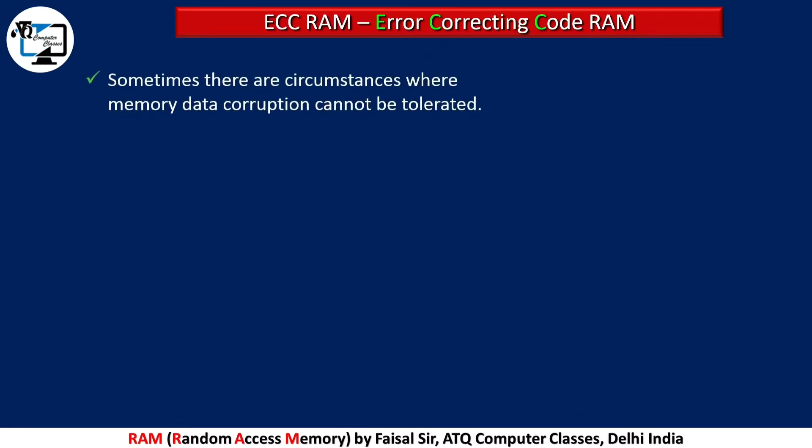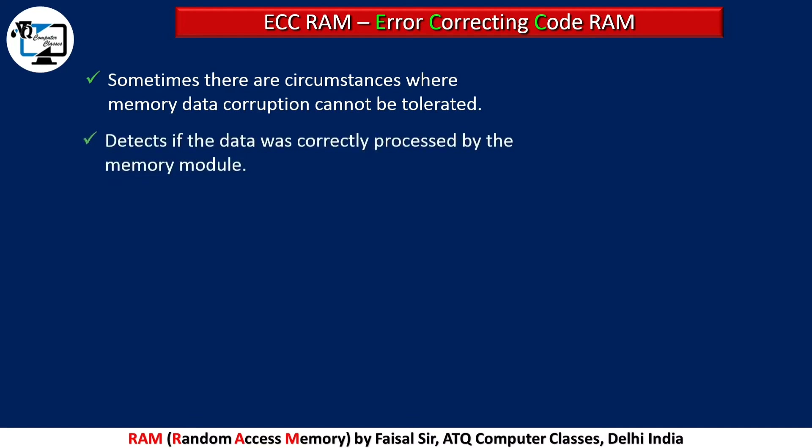Another type of RAM is ECC RAM. ECC stands for Error Correcting Code Random Access Memory. In circumstances where memory data corruption cannot be tolerated, ECC RAM detects if data was correctly processed by the memory module and makes a correction if needed.